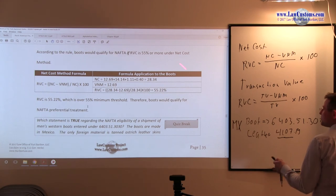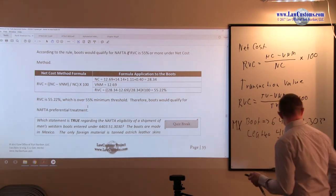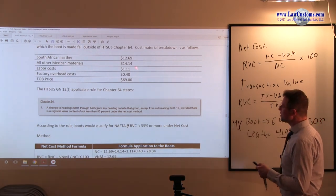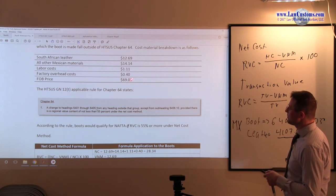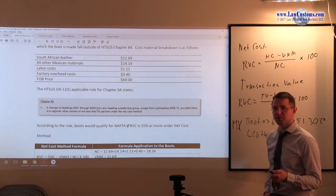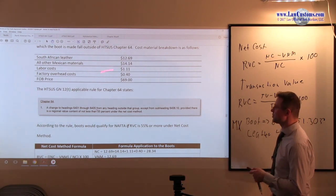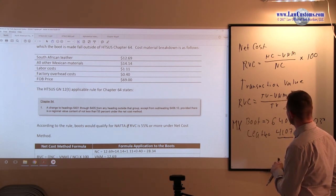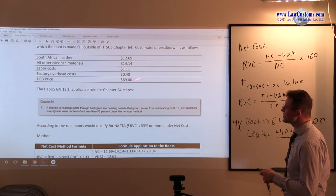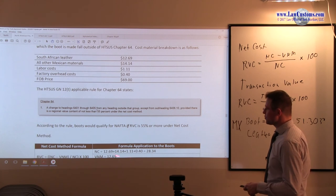We plug in those numbers into this formula. Recall that $12.69 is the cost of that leather. $14.14 for other materials which are originating, labor cost over here $1.11, $0.40 is a factory overhead. And then we have a total FOB price which is $69. Now since it is a net cost value, then we are not really concerned that much with the $69. We are concerned with all this stuff because we are going to plug them in. The net cost itself is comprised of all this stuff. It is not the FOB price. It is comprised of all these items that go into the production. If you add them up, that is the net cost. It will be $28.34 per set of boots.